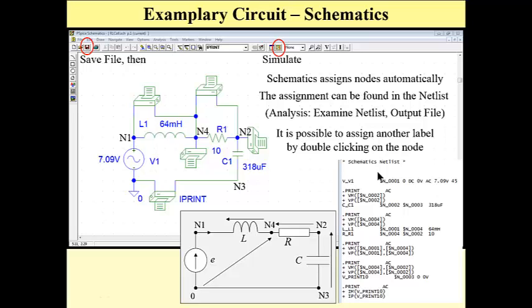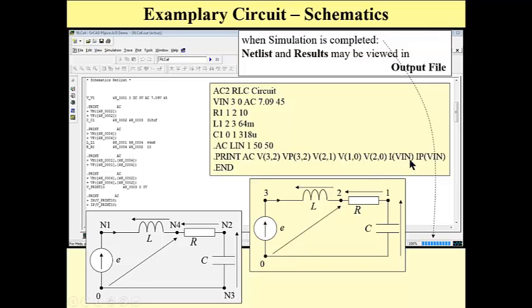It is possible to assign another label to each node, but I'm not going to discuss this subject. So, the simulation is completed. Now we may see the netlist in the output file and also we may see our voltages and current in the output file. Here we have a netlist.